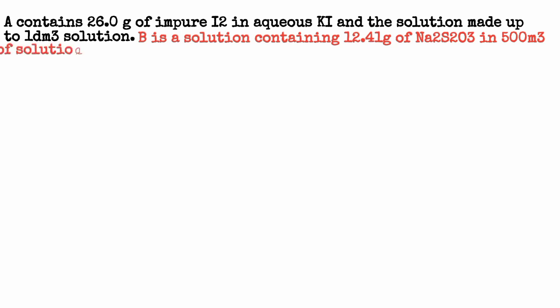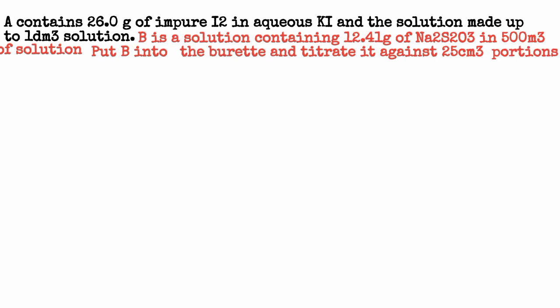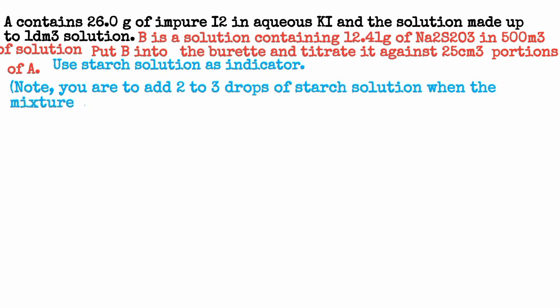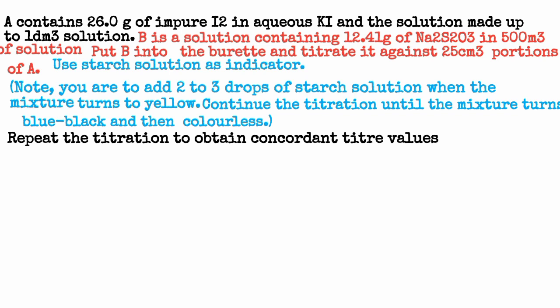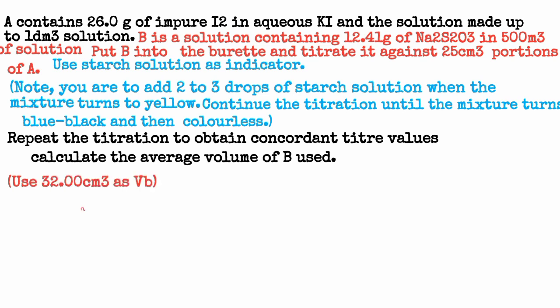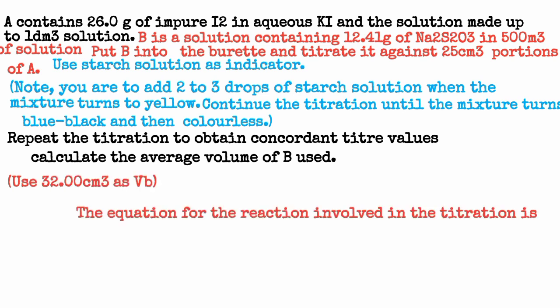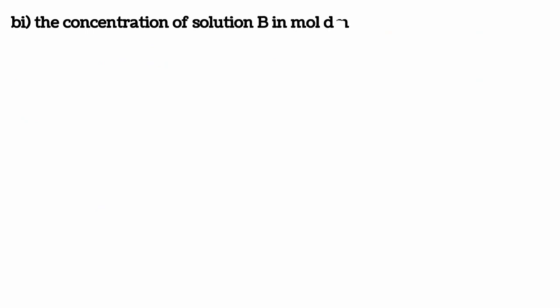We are going to convert that mass to mass concentration. Put B into the burette — that means B is representing our titrant, and we are preparing a table of values for B because B is put into the burette. Use starch indicator; add 2 to 3 drops of starch solution when the mixture turns yellow. Continue the titration until the mixture turns blue-black and then colorless — that is the color at the endpoint. We will use 32.0 cm³ as our VB. At the end of the video, I am going to show the table of values.